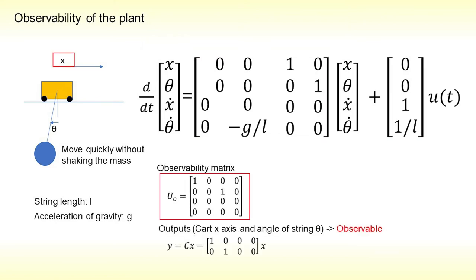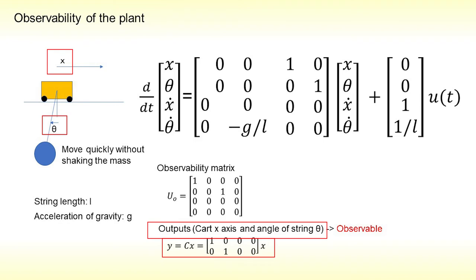Observability matrix for output X is given like this. This system is unobservable. In case outputs cart X axis and angle of string theta are considered, then this system can be considered as observable system. We assume the system is observable.